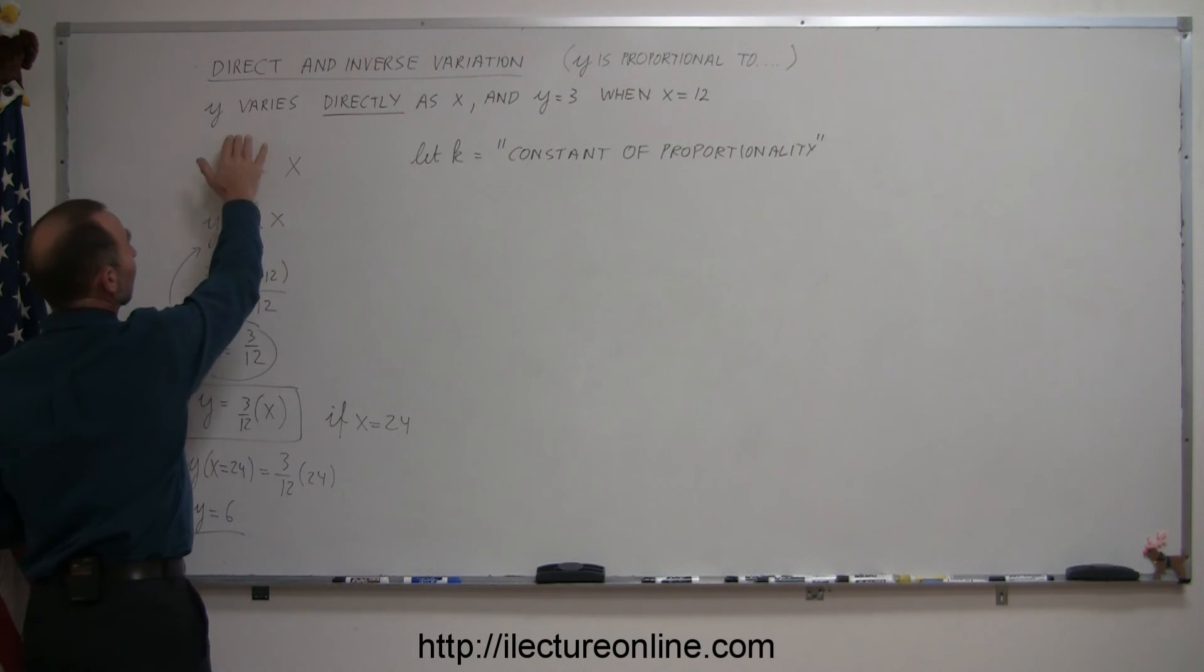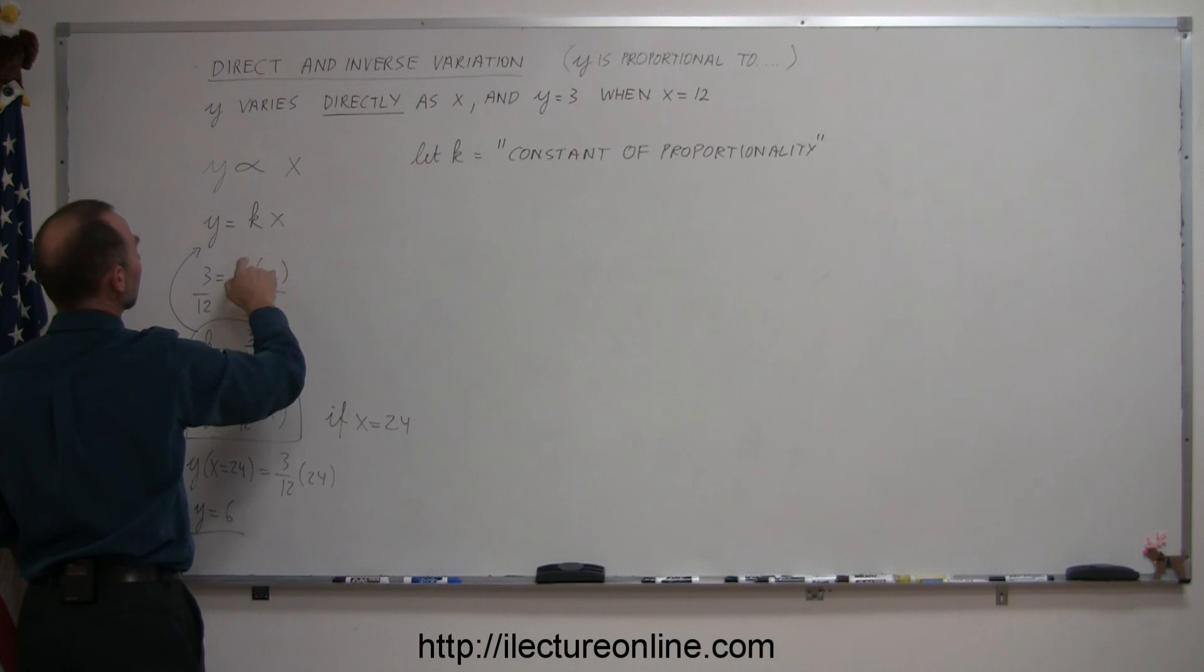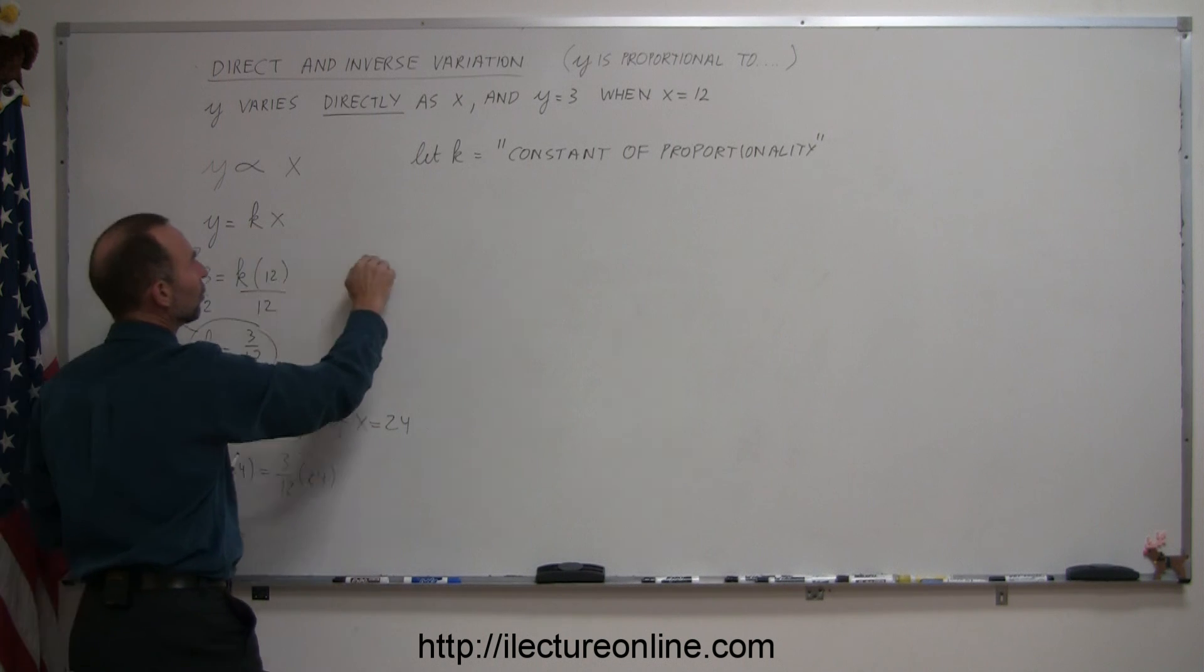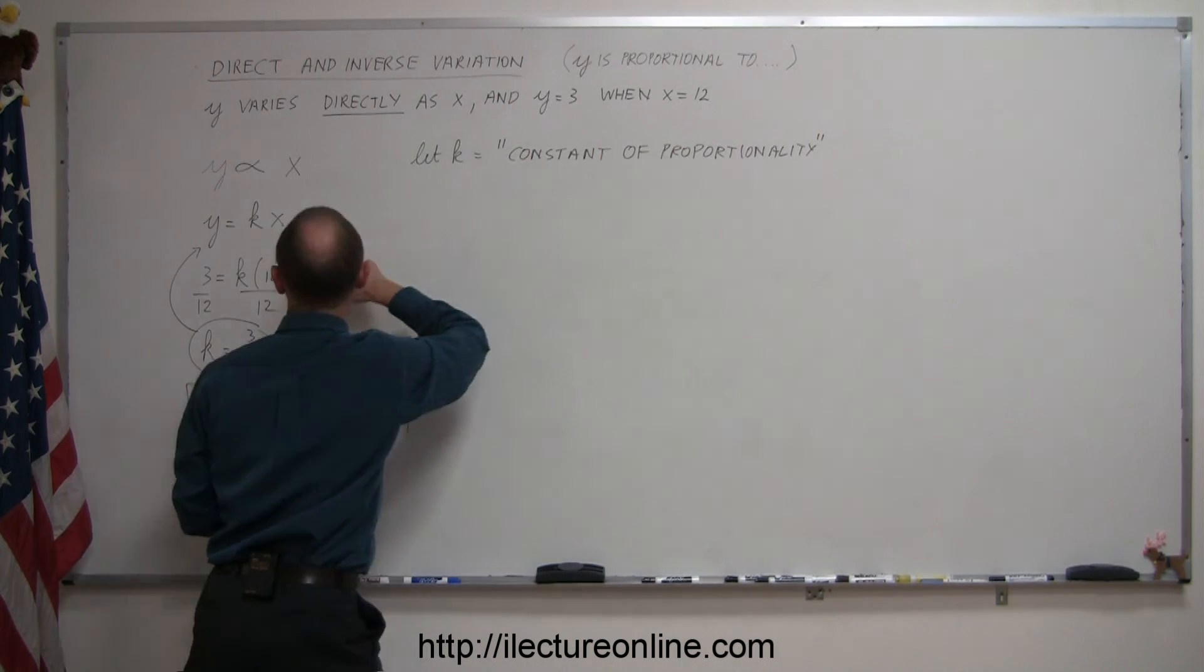they give you some information where they show you that y is proportional to x or y is directly related to x. Then to turn into an equation, you need a constant of proportionality. To find what that is equal to, you plug in the items that are given to you,